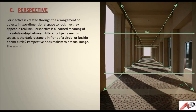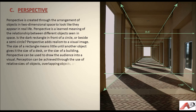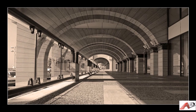Perspective adds realism to a visual image. The size of a rectangle means nothing until another object gives it the size of a desk or the size of a building. Perspective can be used to draw the audience into a visual. Perspective can be achieved through the use of relative sizes of objects, overlapping objects, and blurring or shaping objects. In this corridor we see a clear sense of perspective.